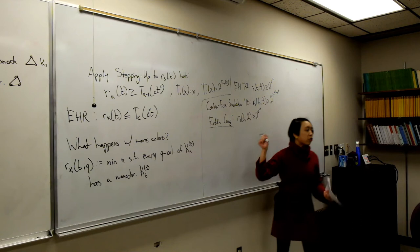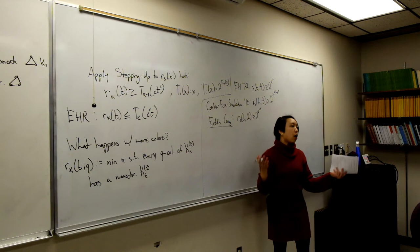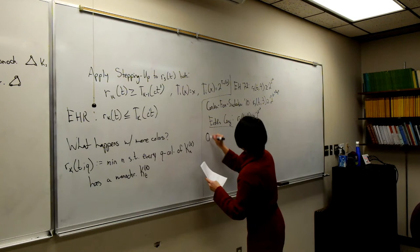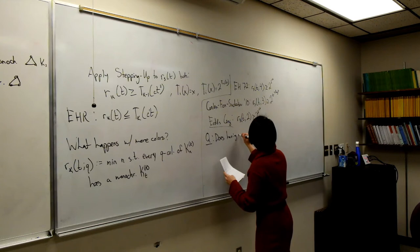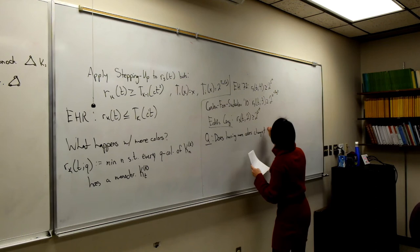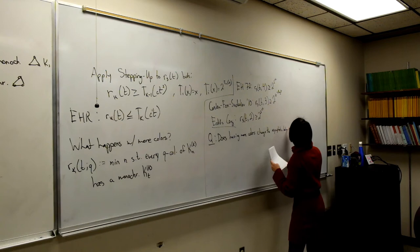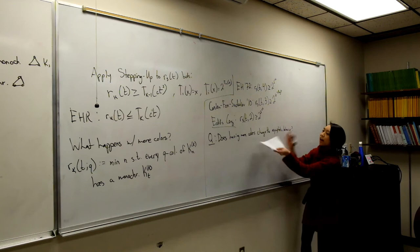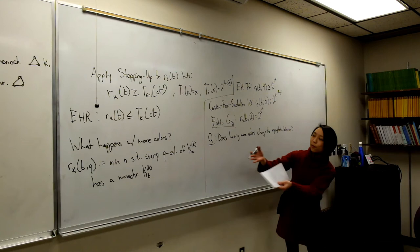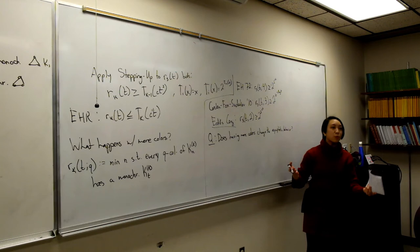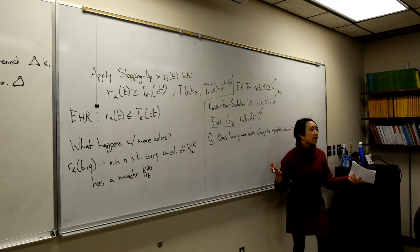This is a new type of question: what effect does the number of colors have on the asymptotic behavior of your Ramsey numbers? One way to tackle this is to generalize the Ramsey notion further — instead of looking at cliques, let's try other types of hypergraphs. I'll define R_K(G, Q) as the minimum N such that every Q-coloring of the complete K-uniform hypergraph has a monochromatic copy of G, where G is some K-uniform hypergraph.